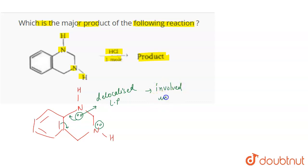will be involved in resonance. So this lone pair of electron will not be available for protonation. Whereas if you talk about this lone pair of electron, then this lone pair of electron is a localized lone pair of electron. It means that this is more basic because it is available for protonation - it is not involved in resonance.